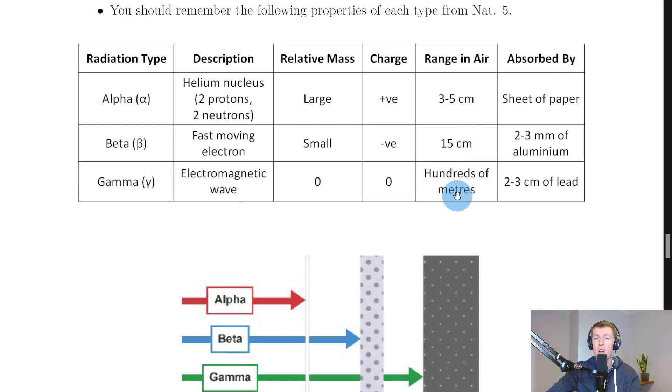And lastly we have what each is absorbed by. So remember alpha particles are absorbed by a single sheet of paper. Beta particles are absorbed by two to three millimeters of aluminium. And the gamma rays are stopped by about two to three centimeters of lead, so that's much thicker than the two to three millimeters.